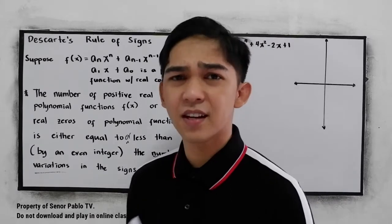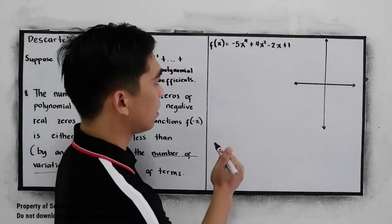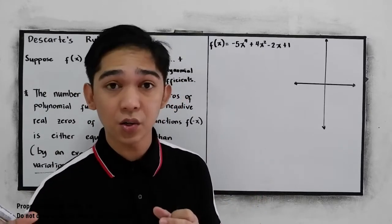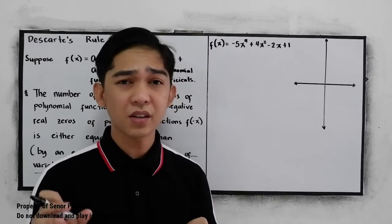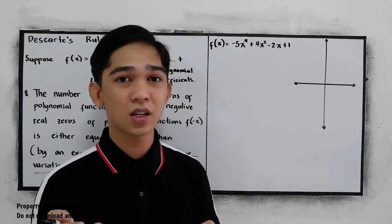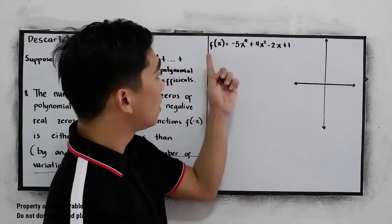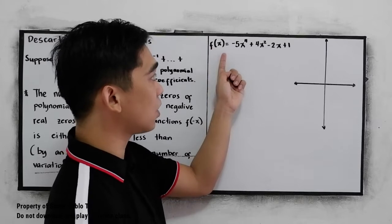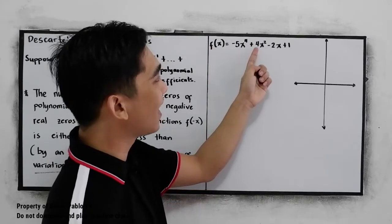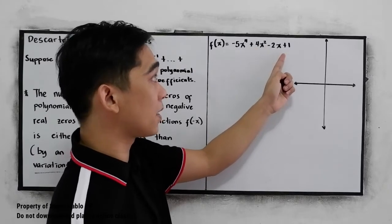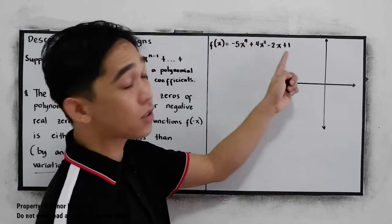To better understand, let's have this example. We're going to find how many positive real zeros and how many negative real zeros. When we say real zeros, we're talking about the real ones, not the imaginary. So f(x) = -5x⁴ + 4x² - 2x + 1, with the exponent arranged from highest to lowest.